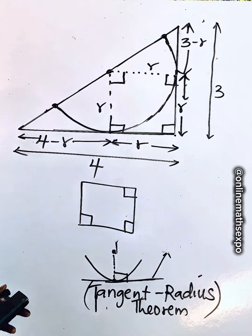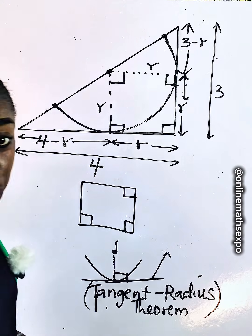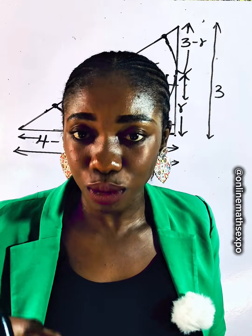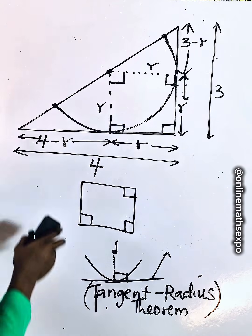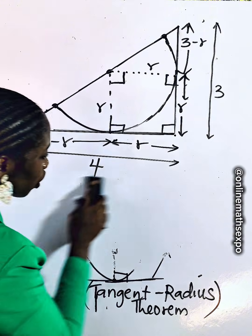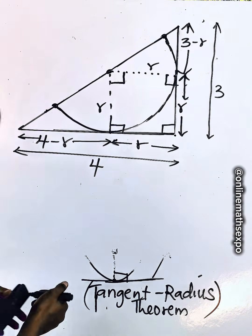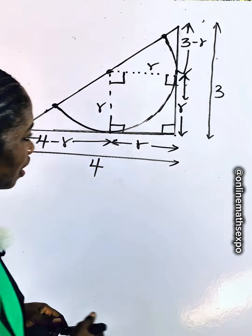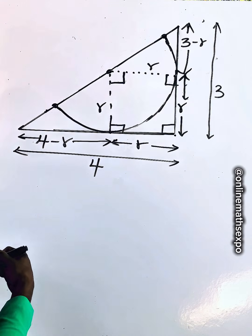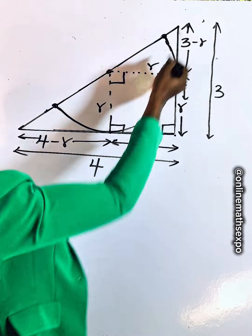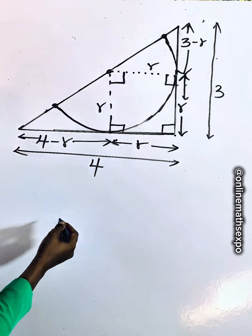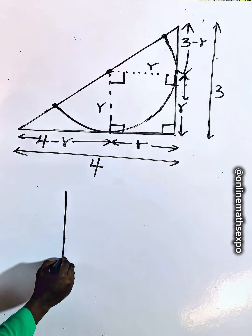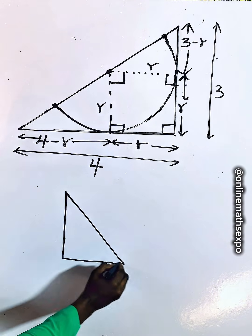The question is to find the area, so we need to get the radius of the semicircle first, then use it to find the area. Using our similar triangle property, we observe that we have the big right triangle with one side of 4 units and another side of 3 units. Let's bring the big right triangle out.